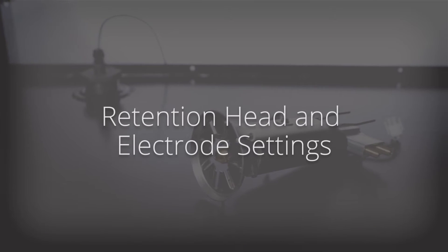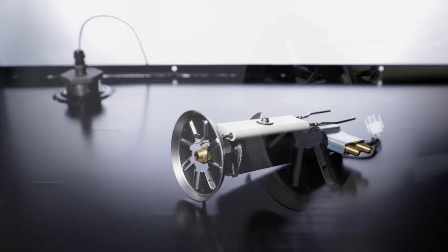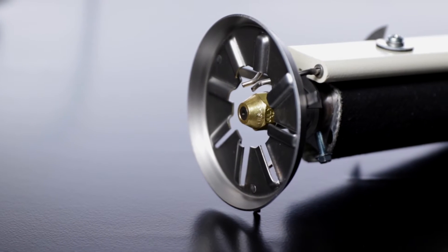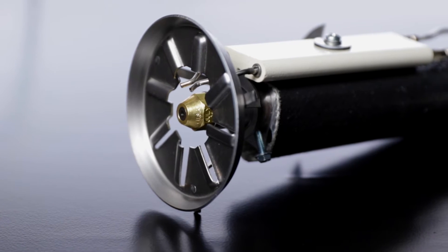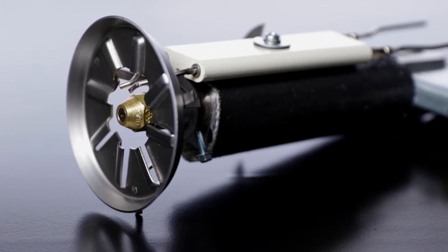This video will explain the proper settings for the retention head and electrode on your EnergyLogic waste oil furnace. You'll need to check and potentially adjust your retention head and electrode settings every time the nozzle line assembly is cleaned or serviced.